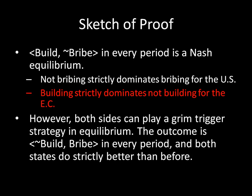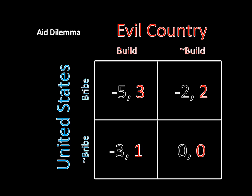Moving on, let's show that building strictly dominates not building for the evil country. Suppose the United States were to bribe — the evil country gets three for building and two for not building; three is greater than two, so the evil country would want to build. If the United States does not bribe, the evil country gets one for building and zero for not building; one is greater than zero, so the evil country would want to build. Thus, regardless of what the United States does, the evil country would want to build, so building strictly dominates not building for the evil country.